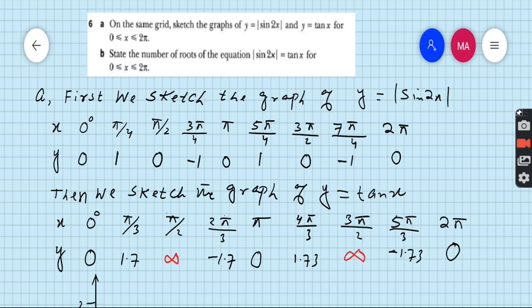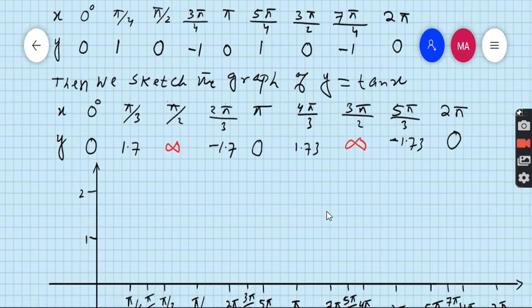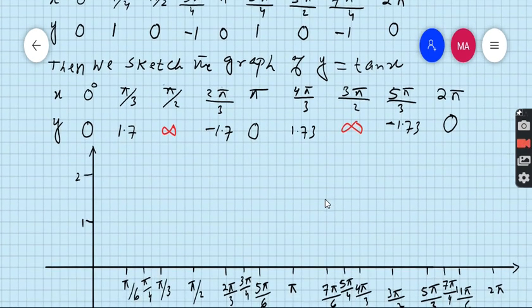Now plot points one by one. First we have to sketch the graph of y equals sin 2x. So first value, when x is 0 then y is 0. This is the first value. When x is pi by 4 then y is 1. Second value, when x is pi by 2 then value is 0.